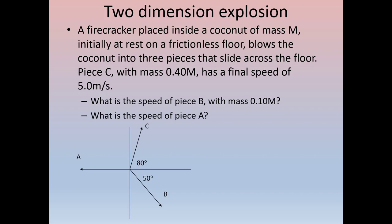Let's start by reading the problem. A firecracker placed inside a coconut of mass M, initially at rest on a frictionless floor, blows the coconut into three pieces that slide across the floor. Piece C, with a mass of 0.40M, has a final speed of 5.0 meters per second.